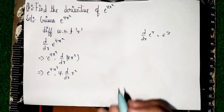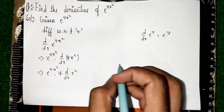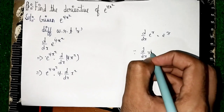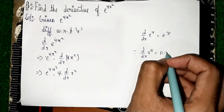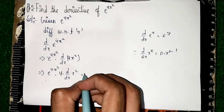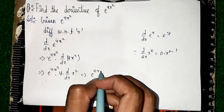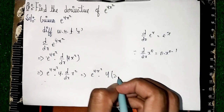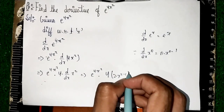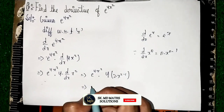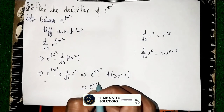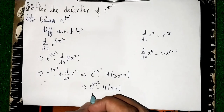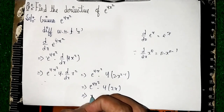d by dx of x power n gives n times x power n minus 1. So it becomes e power 4x squared into 4 into 2 into x power 2 minus 1. Our answer is e power 4x squared into 4 into 2x, which gives e power 4x squared into 8x.